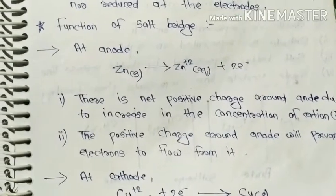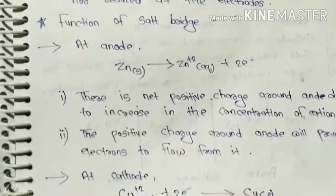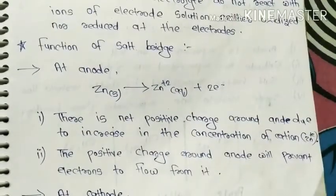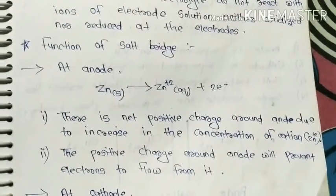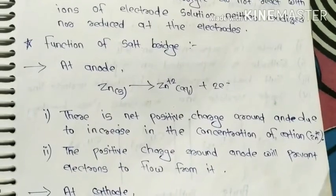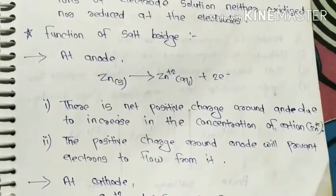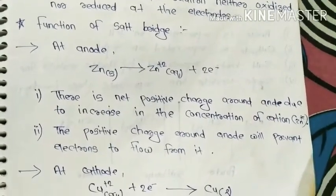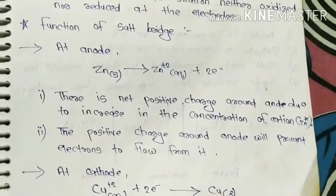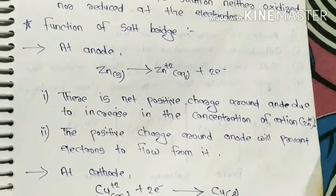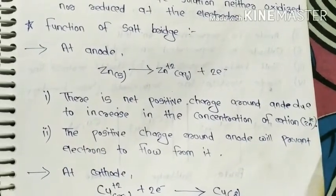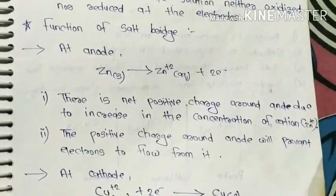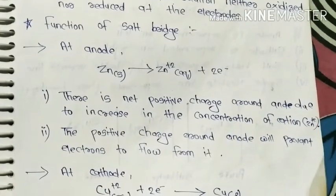Let's see the function of salt bridge. What happens at anode? At anode, zinc loses 2 electrons to form Zn²⁺. Now there is a net positive charge around anode due to increase in the concentration of cations. The positive charge around anode will prevent electrons to flow from it.